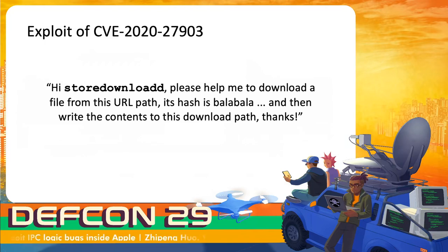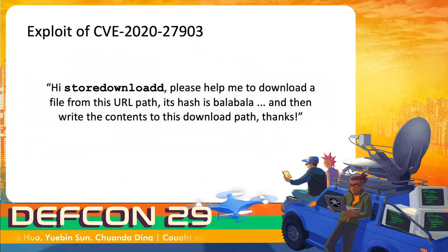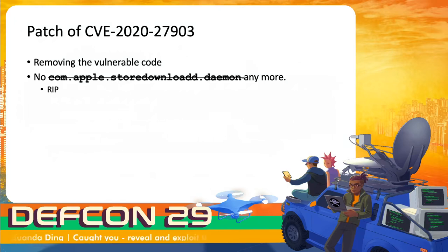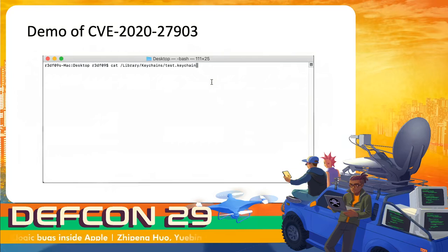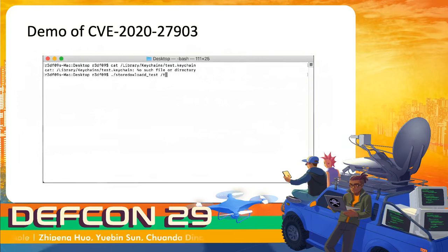The attacker can say: 'Hi storeDownloadD, please help me download the file from this URL, its hash is this, and write the contents to this download path — thanks.' Then storeDownloadD does all the work for the attacker. Apple fixed this vulnerability by removing the vulnerable code — more precisely, they completely removed the server. There is no com.apple.storeDownloadD.daemon anymore. Here is a demo of the App Store vulnerability: we downloaded a test.keychain file into the keychains directory with the help of storeDownloadD.